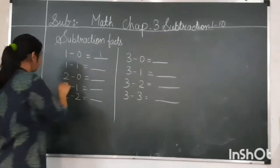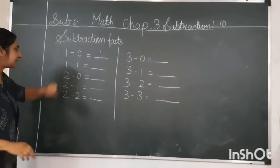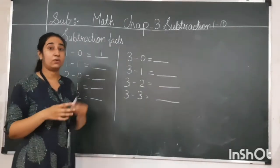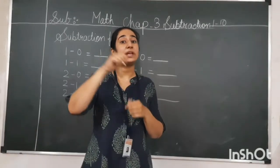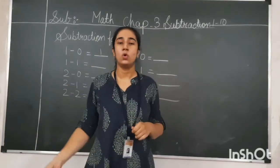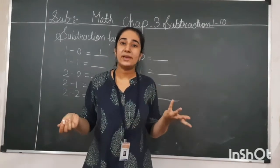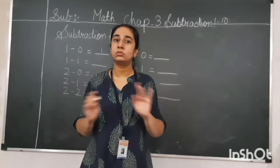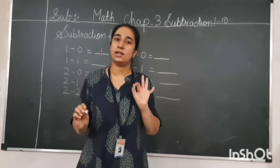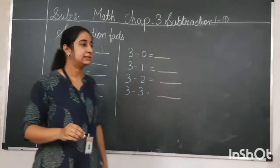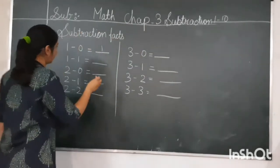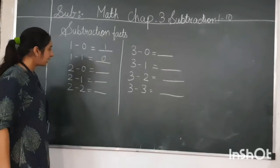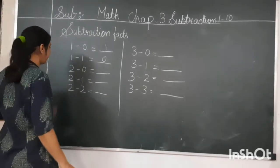Here, 1 minus 1. You are having one chalk and I am taking it from you. How many chalks will remain with you? None — that means 0. So here I will write 0 as the answer.